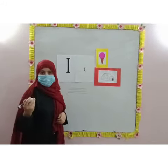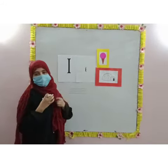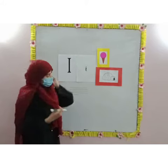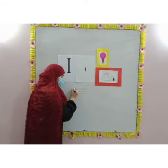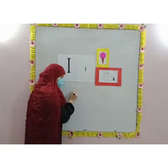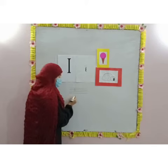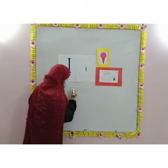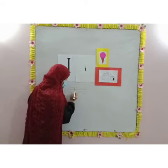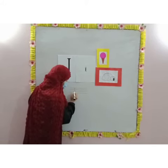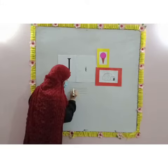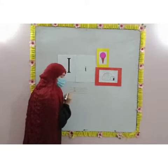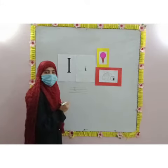Hold your pencil and start writing I with me. Vertical line, from first line till baseline. Draw upward horizontal line and downward horizontal line. This is I.